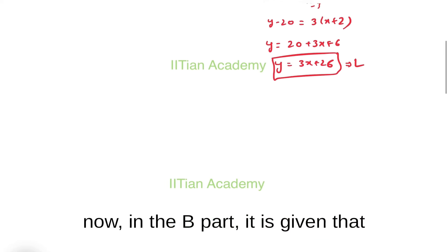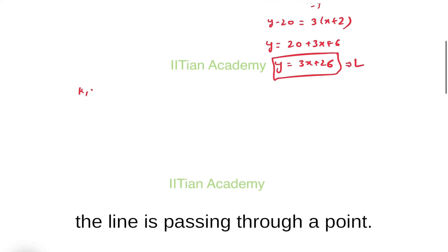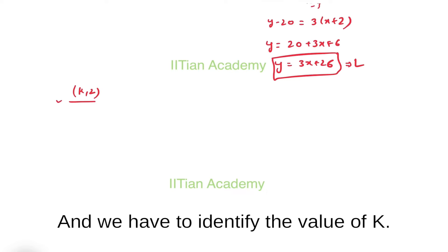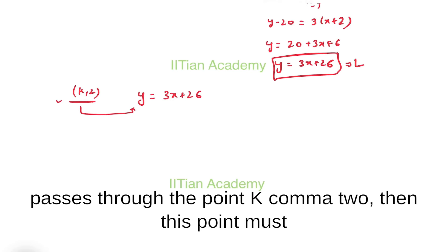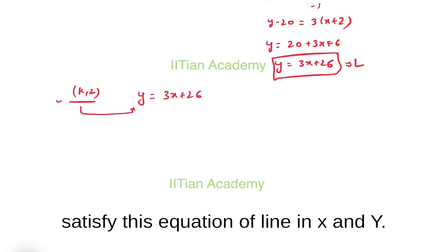In part (b), it is given that the line passes through point (k, 2) and we have to identify the value of k. If this line y = 3x + 26 passes through point (k, 2), then this point must satisfy this equation.